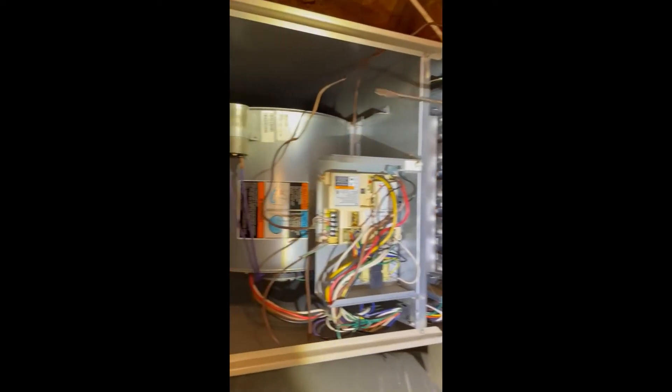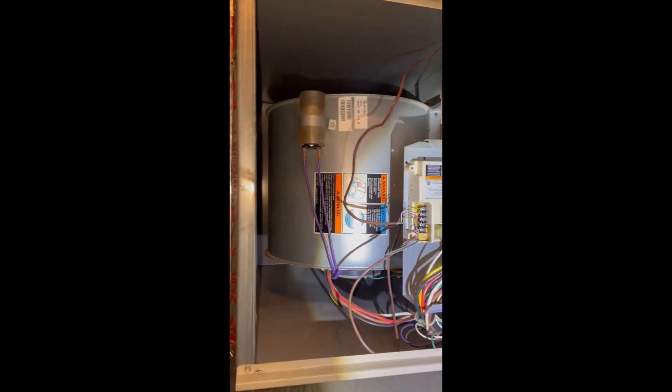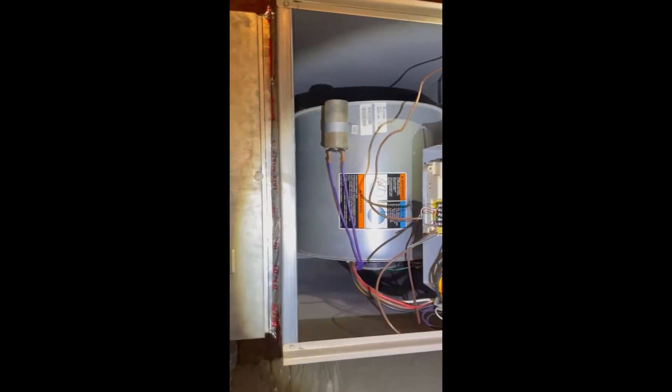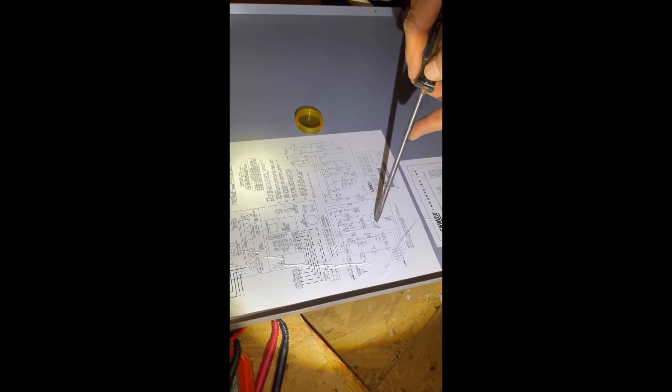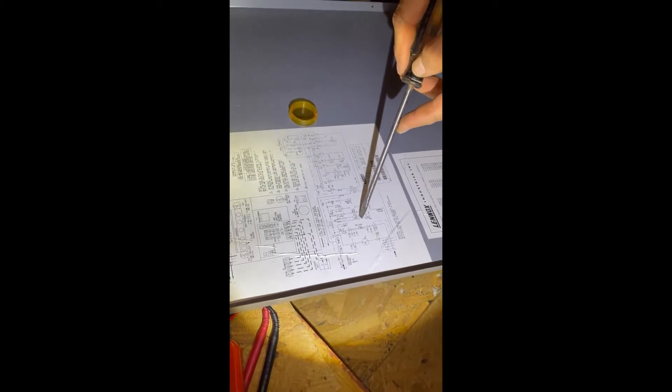Oh there's your blower motor right there. That's a capacitor for your blower. It could be the capacitor on your blower motor's bad. Indoor blower motor right here, C4C blower speed chart.